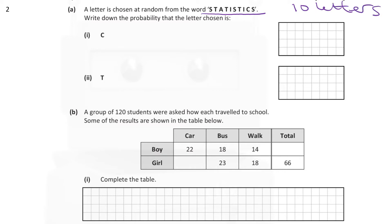And we know C is one of those letters. So the probability that we will choose a letter at random and that it's a C is 1 out of 10.